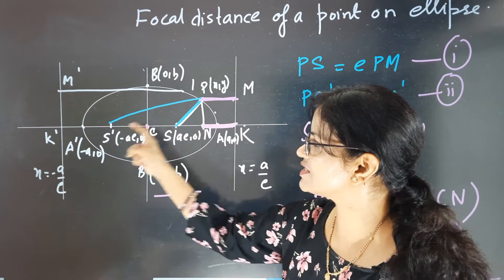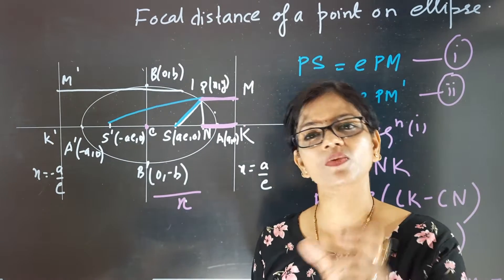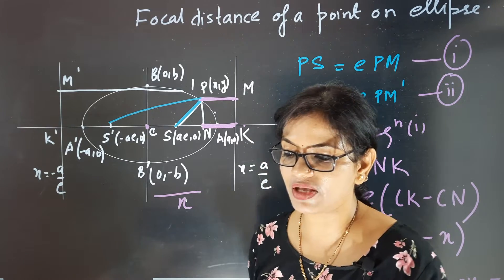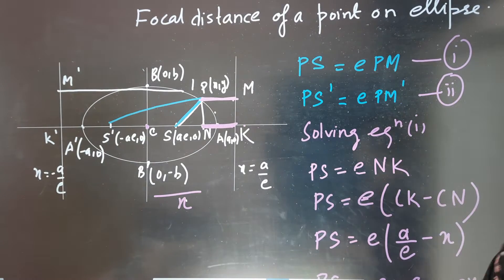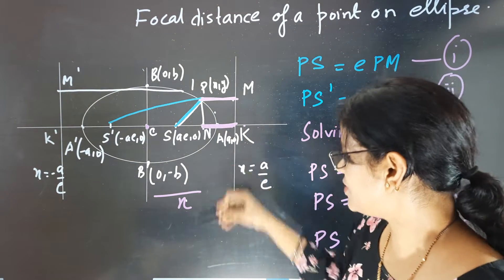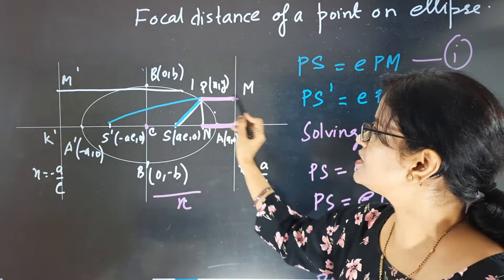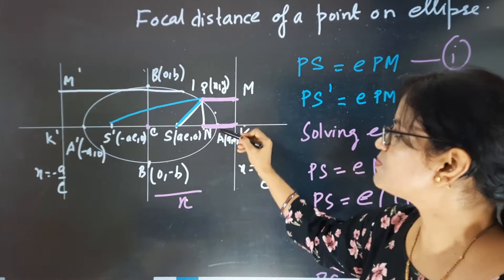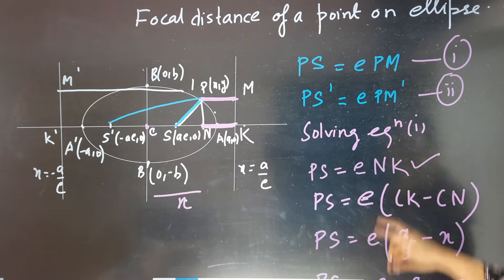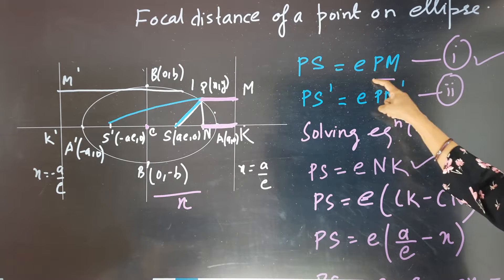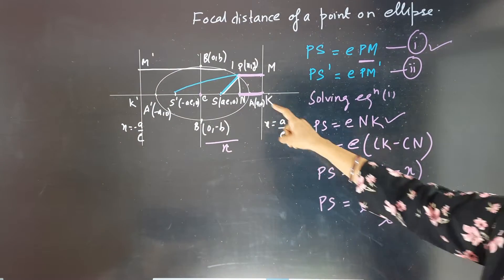We are going to find PS and PS dash. We know the formula PS by PM equals e. PM is the distance from P to the directrix, and since PM is parallel to NK, we substitute PM by NK.